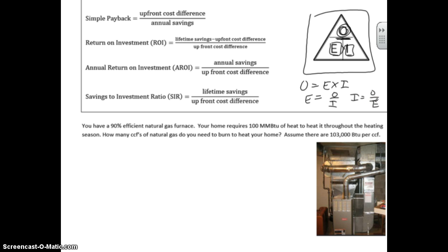Let's use those equations and figure out our problem. In this case, we have a 90% efficient natural gas furnace. We need 100 mmBTUs to heat the home, and we want to know how many CCFs of gas do we need to heat the home. We will assume there are 103,000 BTUs per CCF.